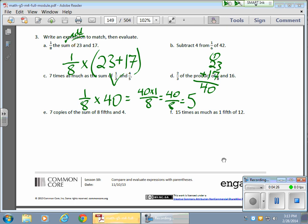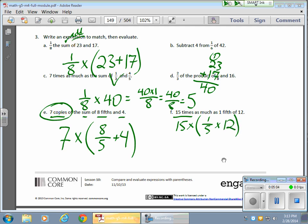Some of these are kind of fun here, like this guy here. Seven copies of the sum of 8 fifths and 4. I need to take 8 fifths. Add 4. And then make seven copies of that, which means multiply it by a whole number of 7. And then you can evaluate that one. That's kind of cool. These are kind of neat. 15 times, 15 times as much as 1 fifth of 12. So 15 times as much of 1 fifth of 12. Kind of neat. So 15 times as much as 1 fifth of 12. So pretty neat stuff. Lots of evaluating. Lots of work to do in here. But great. Okay, folks? So those are the kinds of things.